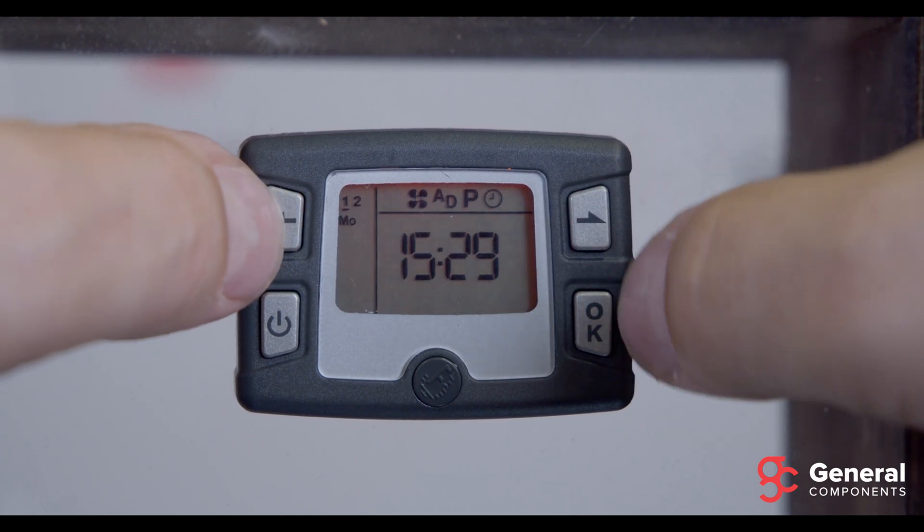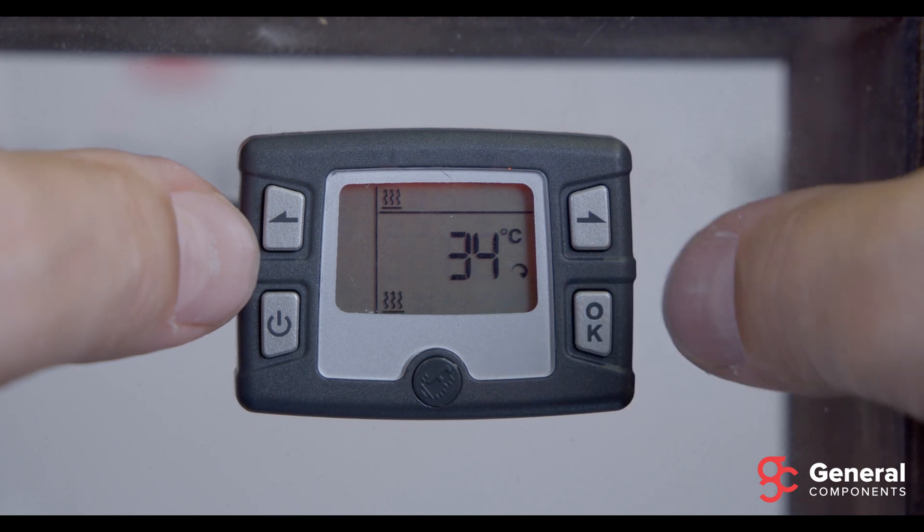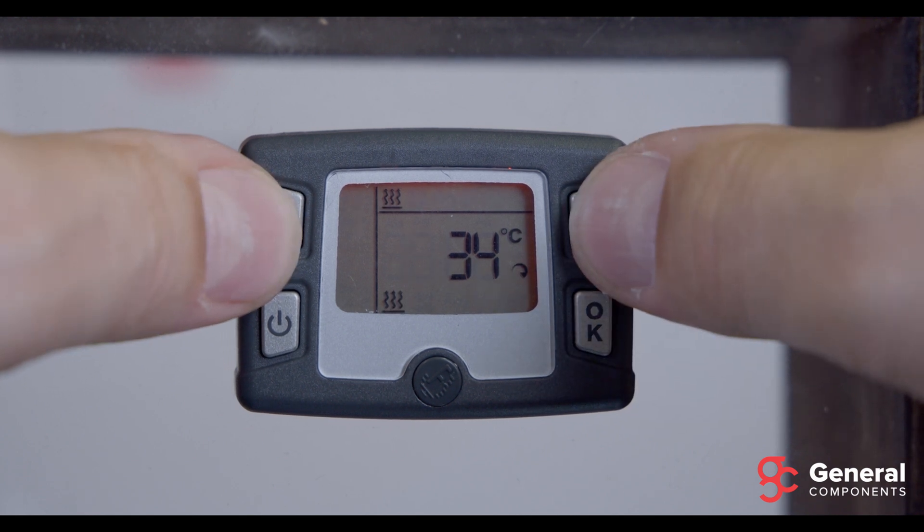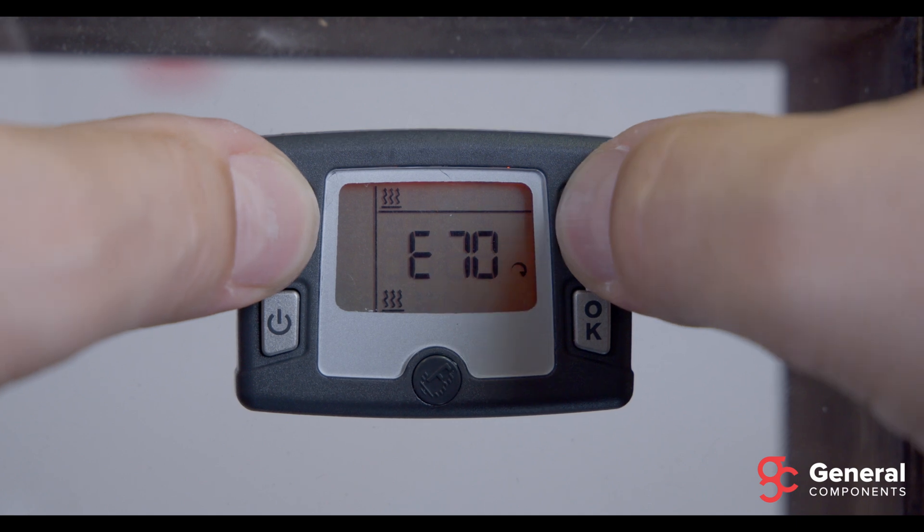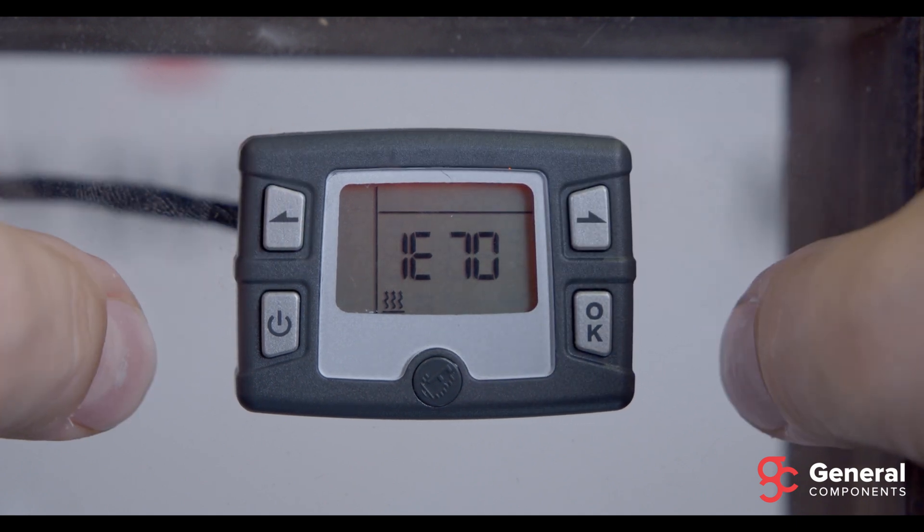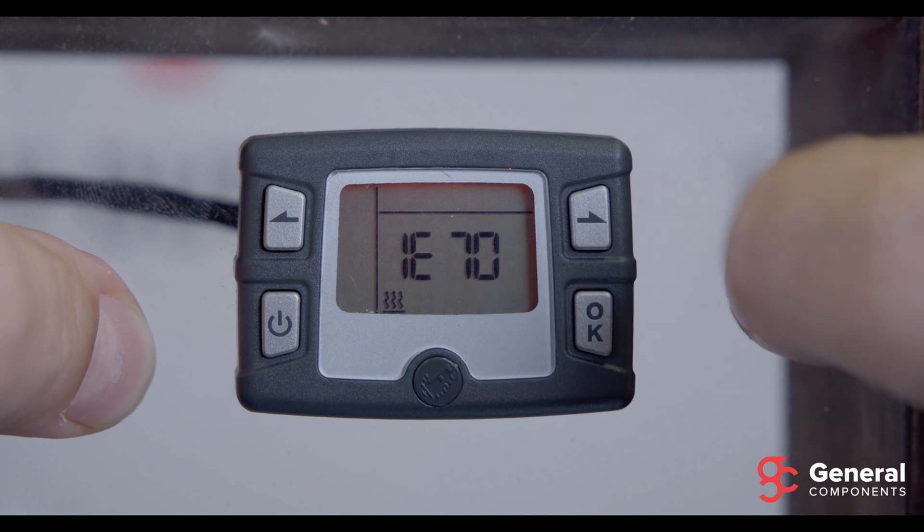To read the fault codes that are recorded by the ECU, navigate to the heat icon and hit OK. And when you're inside the heat mode, press both arrow keys at the same time and it takes you to the fault code screen. Right now, as you can see, we have the first fault code of E70, which is the fuel pump open circuit fault.